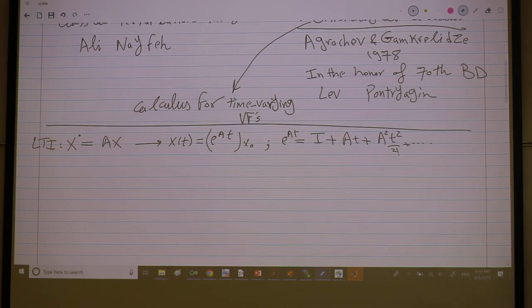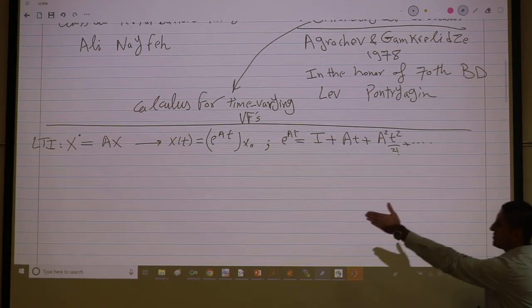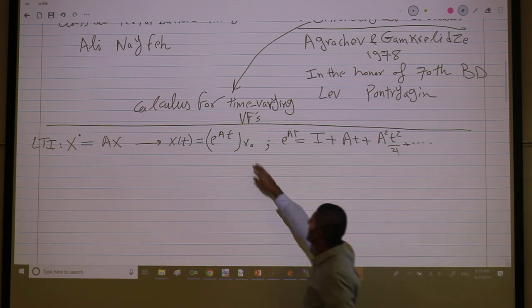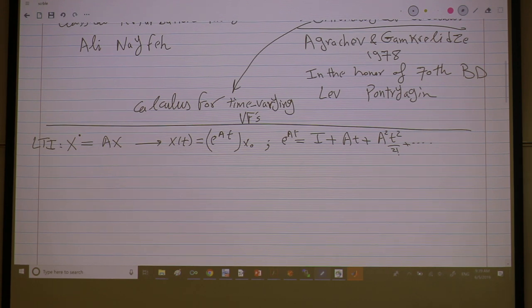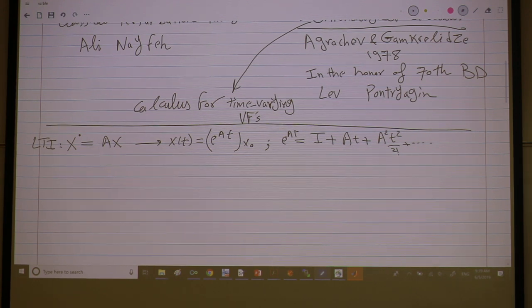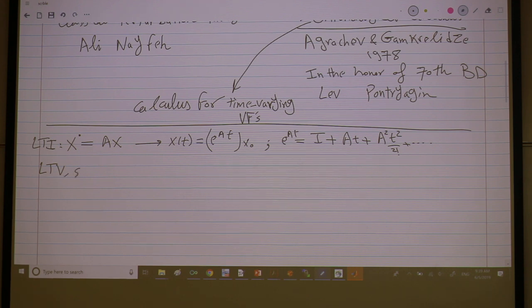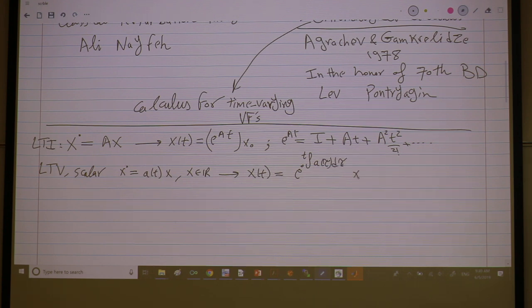So we have an exponential representation of the solution of this differential equation acting linearly on the initial point, transferring it to the final point. If we have linear time varying but scalar, x dot equals A of t times x, x in R, the solution as you guys know is just the exponential of the integral of A times x naught.